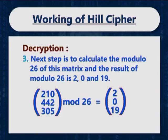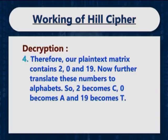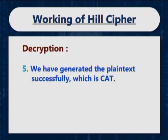The next step is to calculate the modulo 26 of this matrix, and the result of modulo 26 is 2, 0 and 19. Therefore our plain text matrix contains 2, 0 and 19. Now further translate these numbers to alphabets: 2 becomes C, 0 becomes A and 19 becomes T. As you can see, we have successfully generated the plain text which is C, A, T.